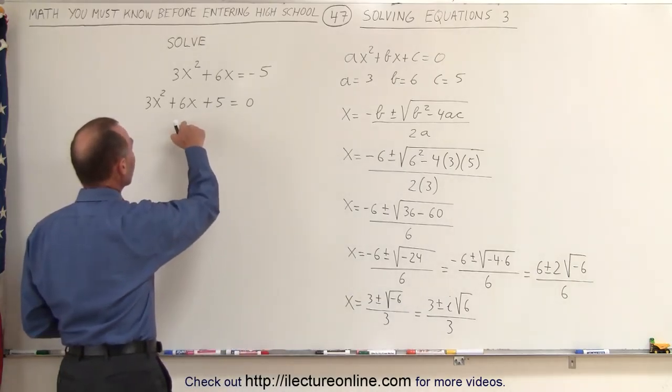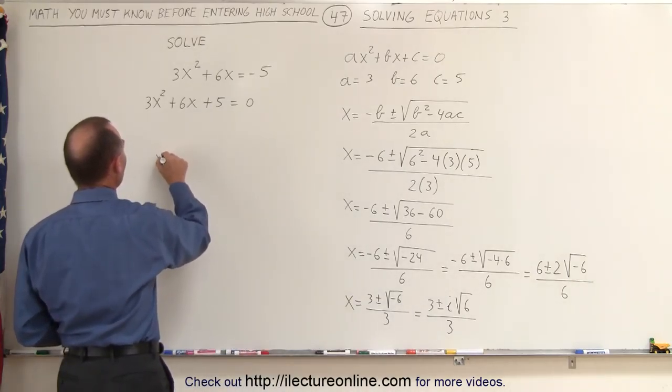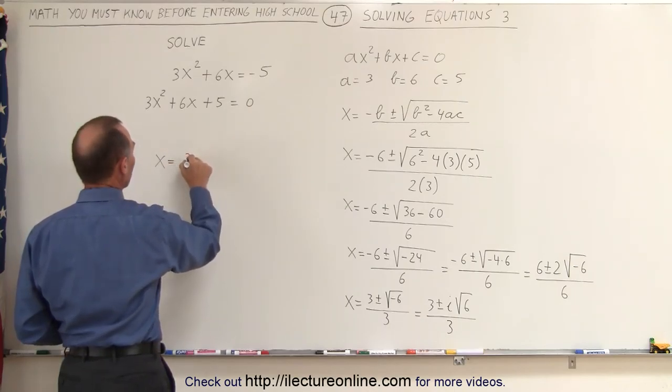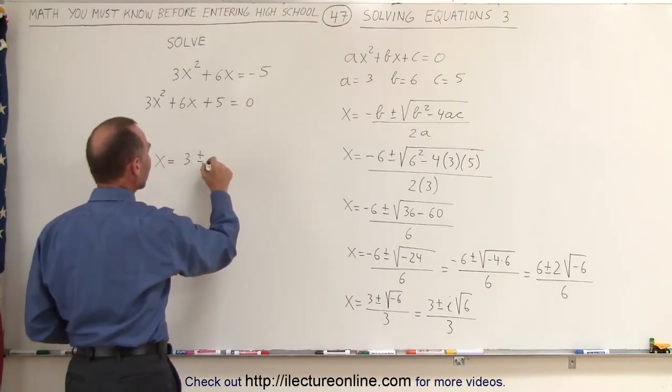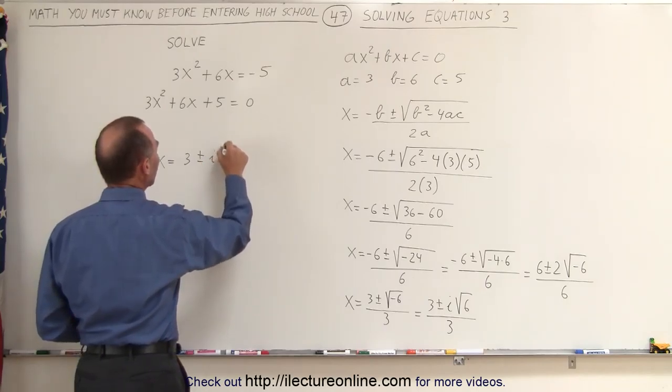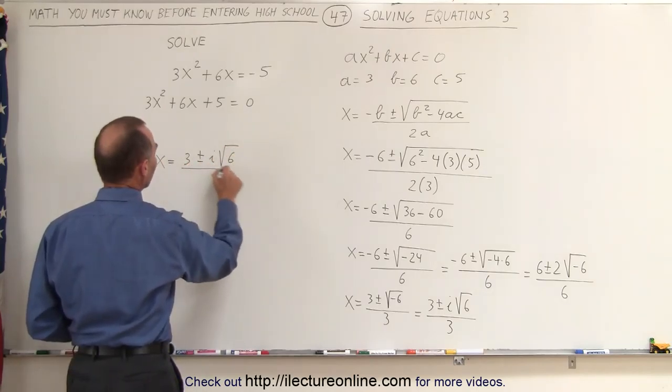So finally, we can say that the solution to this equation is that x is equal to -3 plus or minus, so there's two solutions, the plus and the minus, i times the square root of 6, all divided by 3.